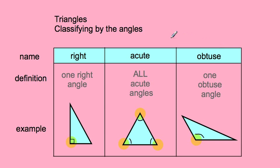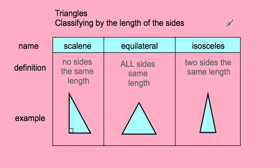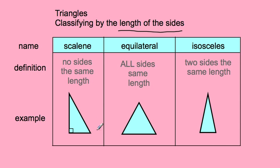That covers naming by the angles. The other part of the name is classifying by the length of the sides, and these names are not quite as easy to memorize. When you have zero sides being the same length — all three sides are different lengths — you have what's called a scalene triangle. It means no sides the same length.